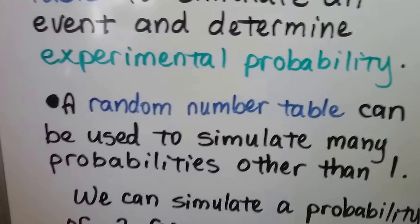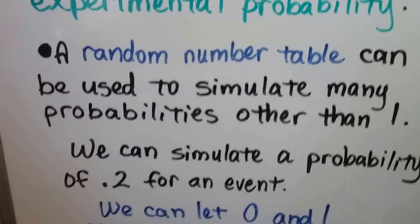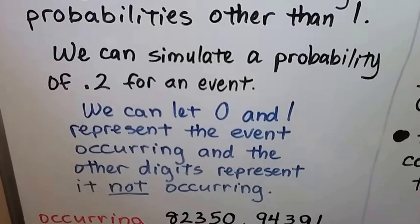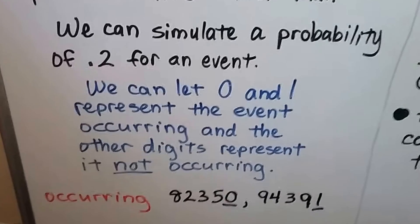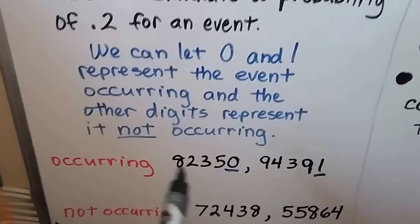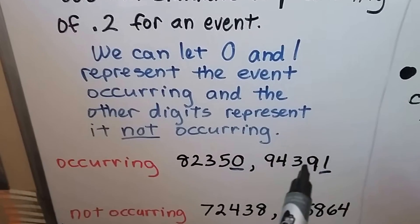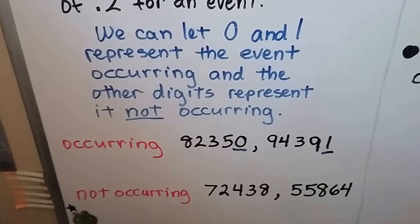A random number table can be used to simulate many probabilities other than 1. We can simulate a probability of 0.2 for an event. We can let 0 and 1 represent the event occurring and the other digits represent it not occurring. So we could say if there's a 0 in this five-digit number or a 1, then it means the event occurred. If it doesn't have a 0 or 1, we could say it didn't occur.